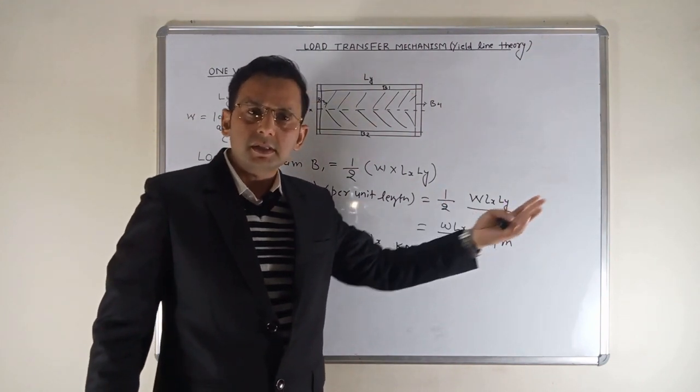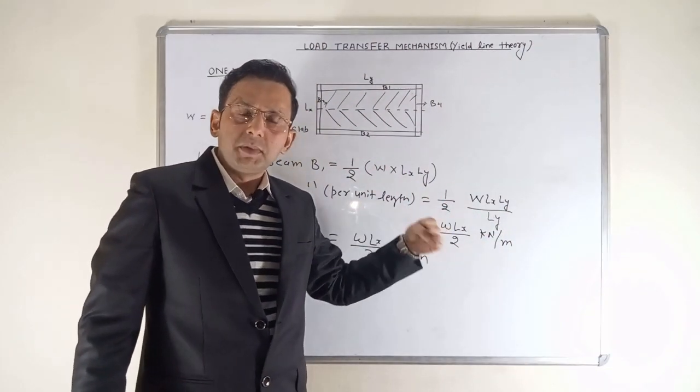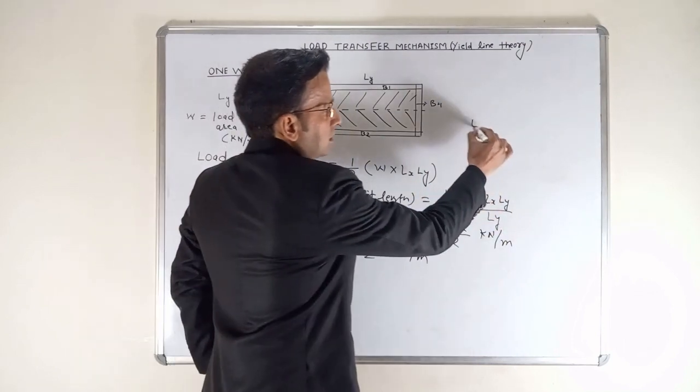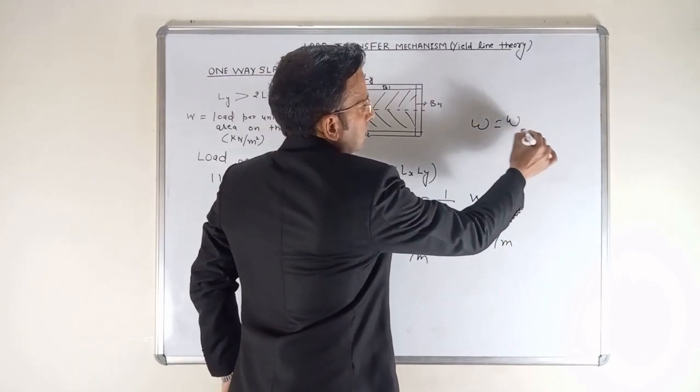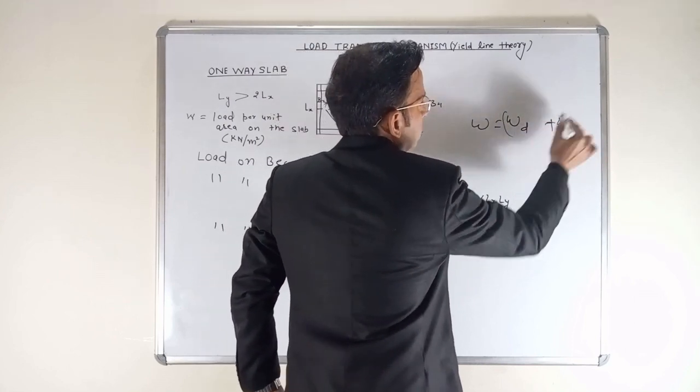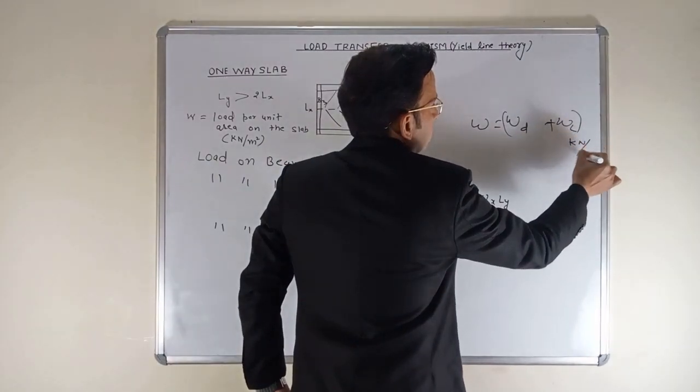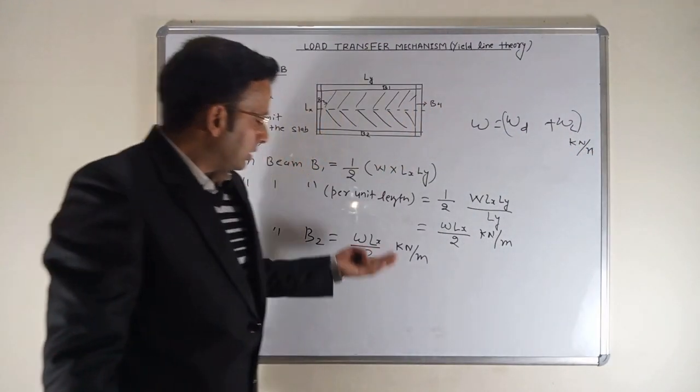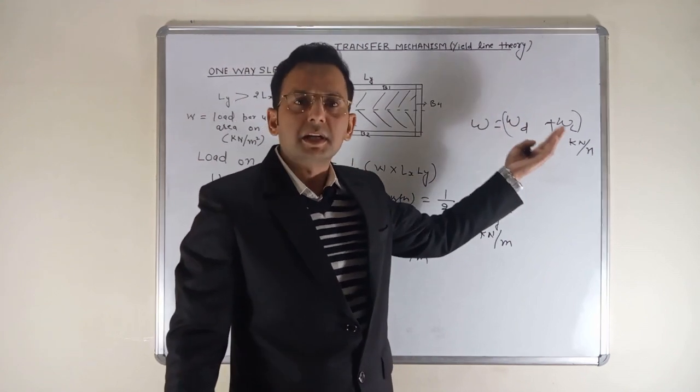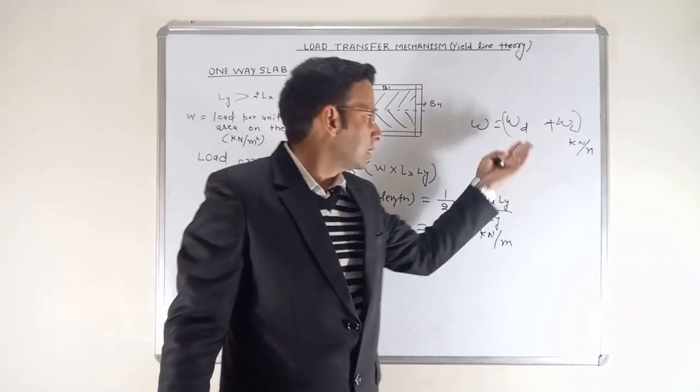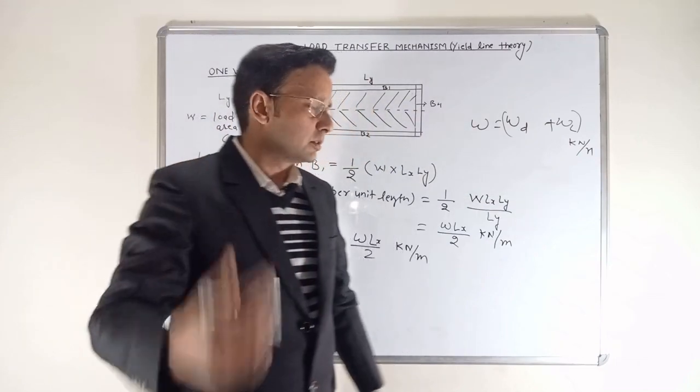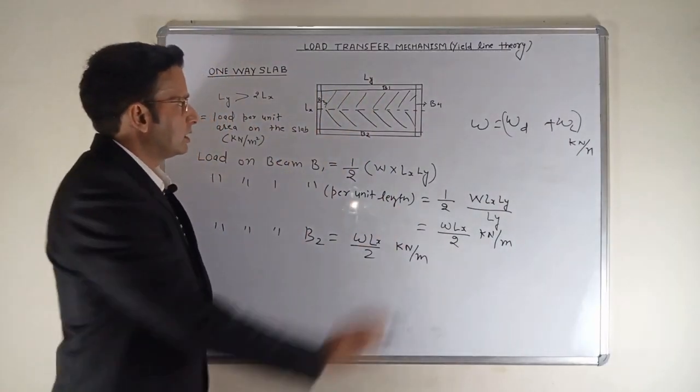Now this superimposed load or live load you can use in your design. For example, after that you calculate the bending moment. When you calculate the bending moment, WL squared by 8, you need W, which is nothing but the Wd dead load plus Wl live load kilonewton per meter. So you can use this value to calculate the per running meter weight on the beam and in this way you can proceed to design further.